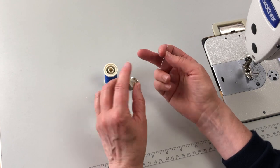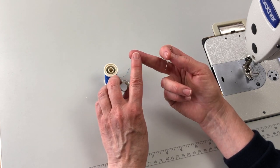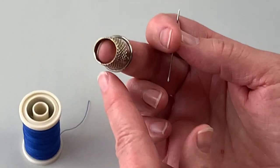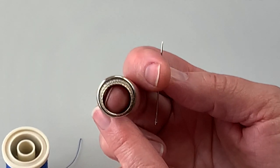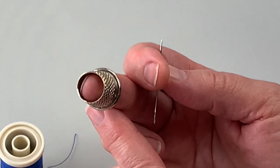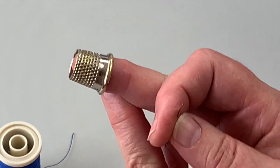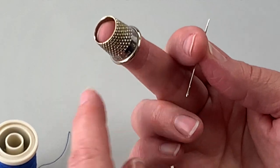Secondly, the thimble, worn on the middle finger of the hand. And you can see that this thimble is open-ended and covered with a set of indentations. Now these trap the needle securely.